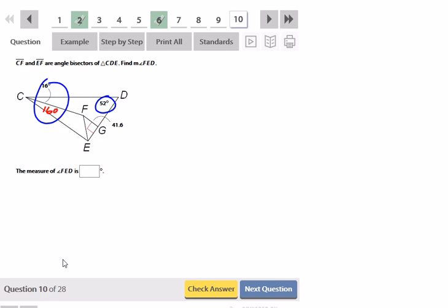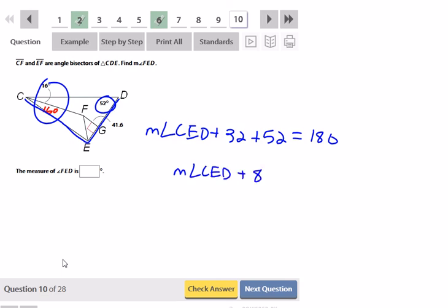And that, combined with this CED. If I get that and add it to CED, measure of angle CED, plus the 32, plus the 52, should give me 180. So, the measure of angle CED plus 84 is equal to 180, minus 84 on both sides. So, the measure of angle CED is equal to 96.